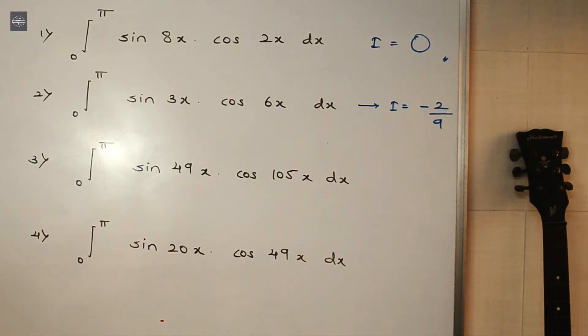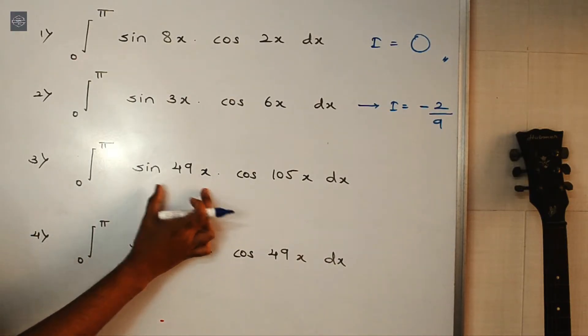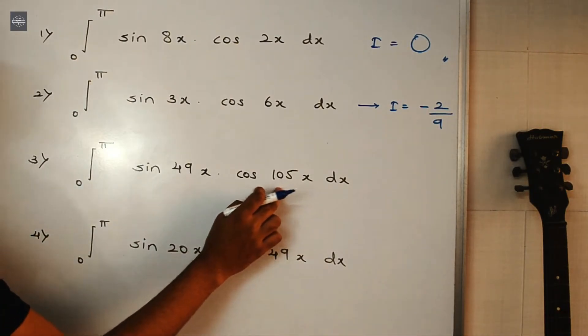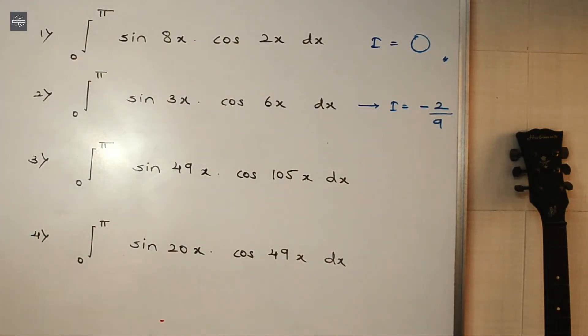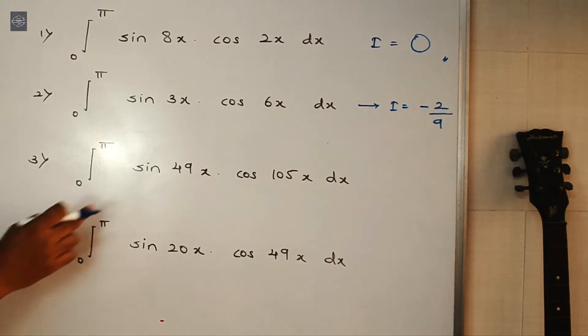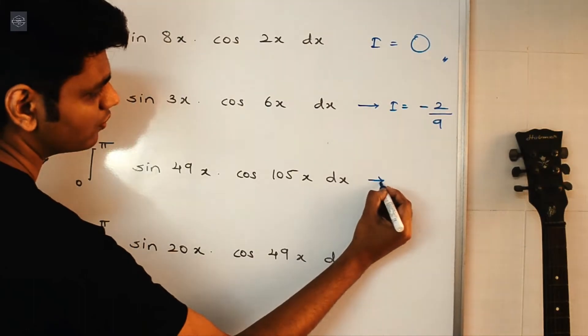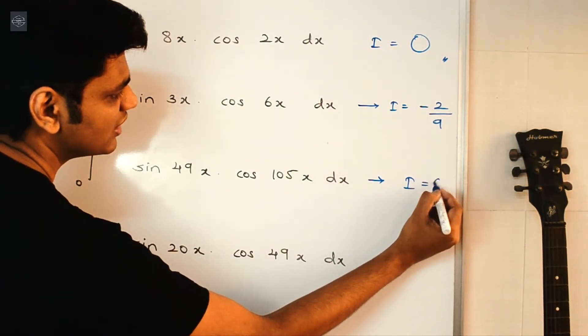And then for the next one, here we have sin 49x into cos 105x. So 49-105, it is minus 56. 56 means it is an even number. So straight away, the value of this entire integral, it will be 0. So i is equal to 0 here.